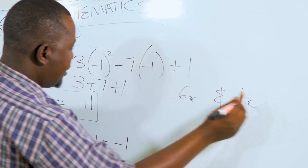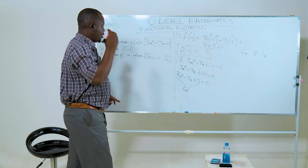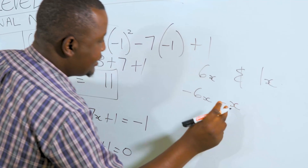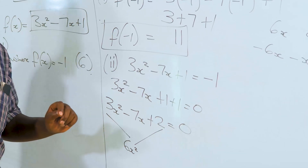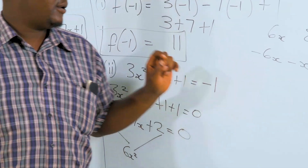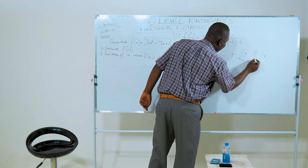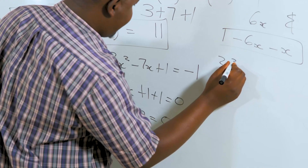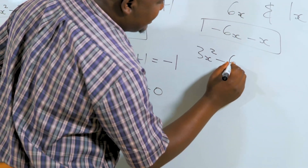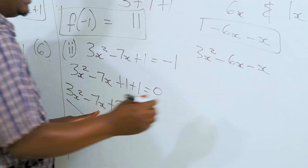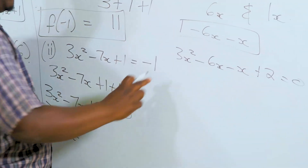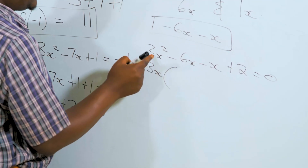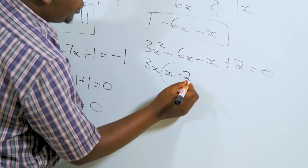So we have negative 6x and negative 1x. Negative 6x minus 1x gives us negative 7x, and negative 6x multiplied by negative 1x gives us positive 6x squared. These are the factors we are looking for. So we rewrite the equation as 3x squared minus 6x minus x plus 2, equated to zero, and factorize.